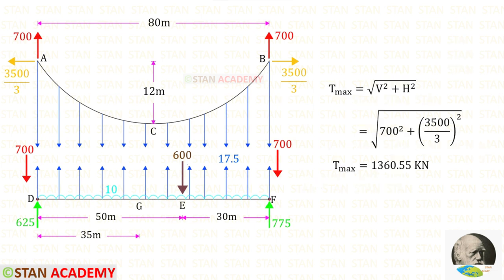Now let us find the maximum tension. We know the formula: T_max = √(V² + H²). Applying both values, for T_max we will get 1360.55 kN.